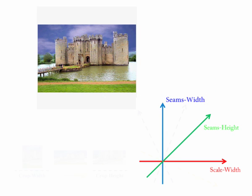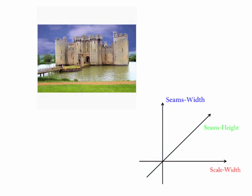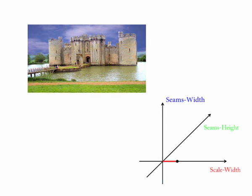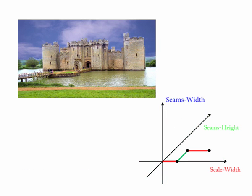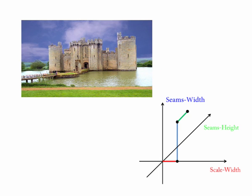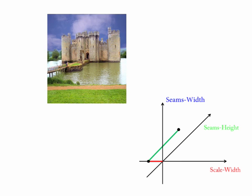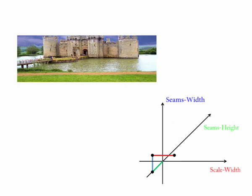For example, using three operators in two directions creates a six-dimensional resizing space. A path in resizing space represents an ordered sequence of operations applied to the media during the retargeting process. Different results can be achieved using different operator paths.